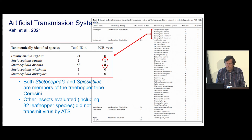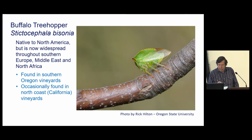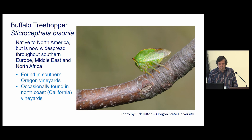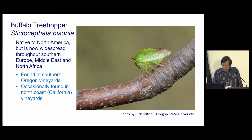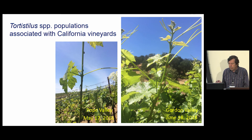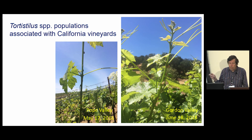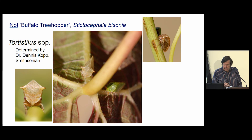That's kind of confirmation that there's some fidelity with the species that can transmit grape red blotch virus. One of these species, Stictocephala bisonia, the buffalo treehopper, is also found in some northern California vineyards and is probably the more common insect found in southern Oregon vineyards, so it could potentially be a vector here. Another treehopper we've been studying is another Stictocephala called torticilis. We first saw them in a Pope Valley vineyard and then later in a Gordon Valley vineyard.